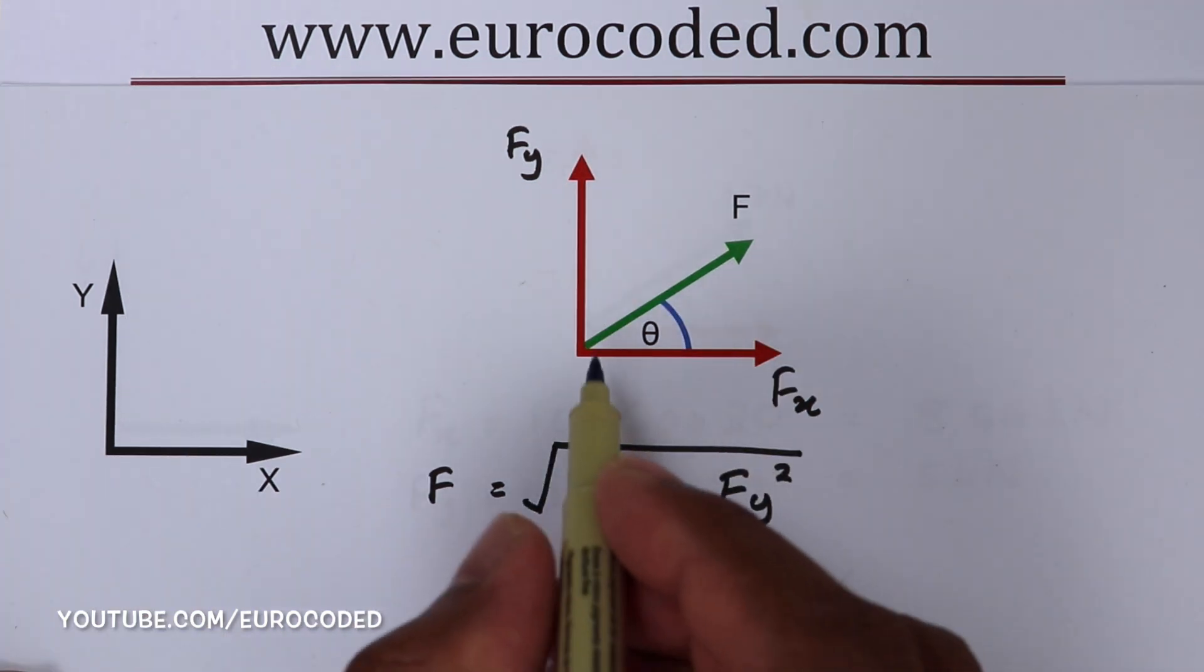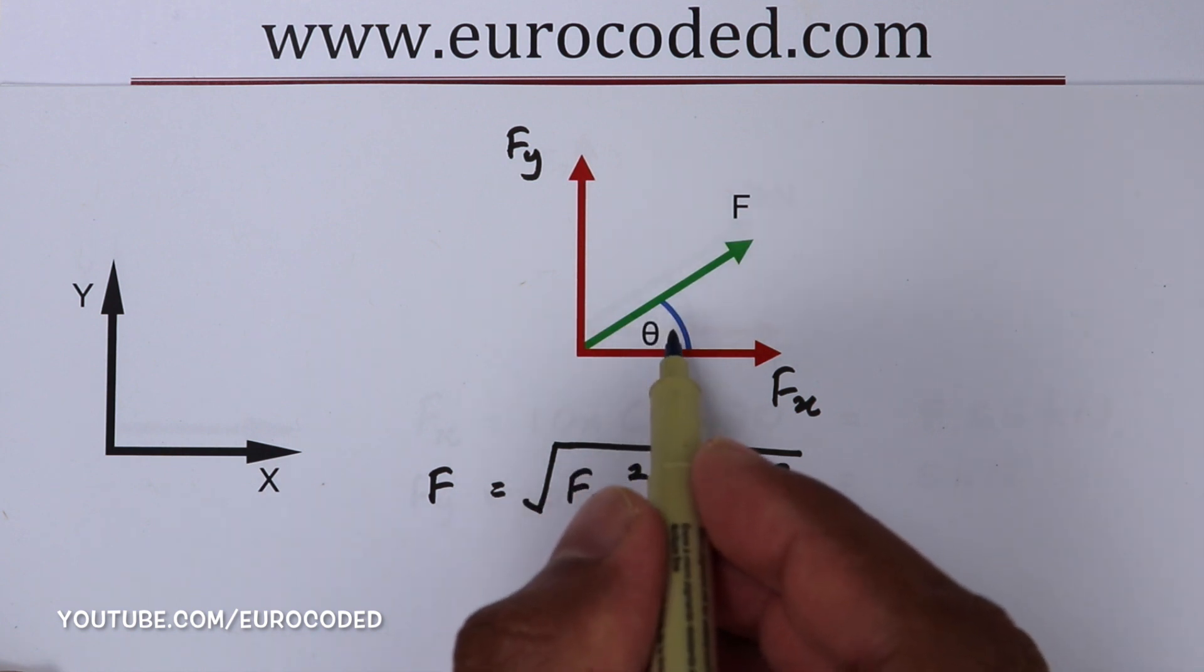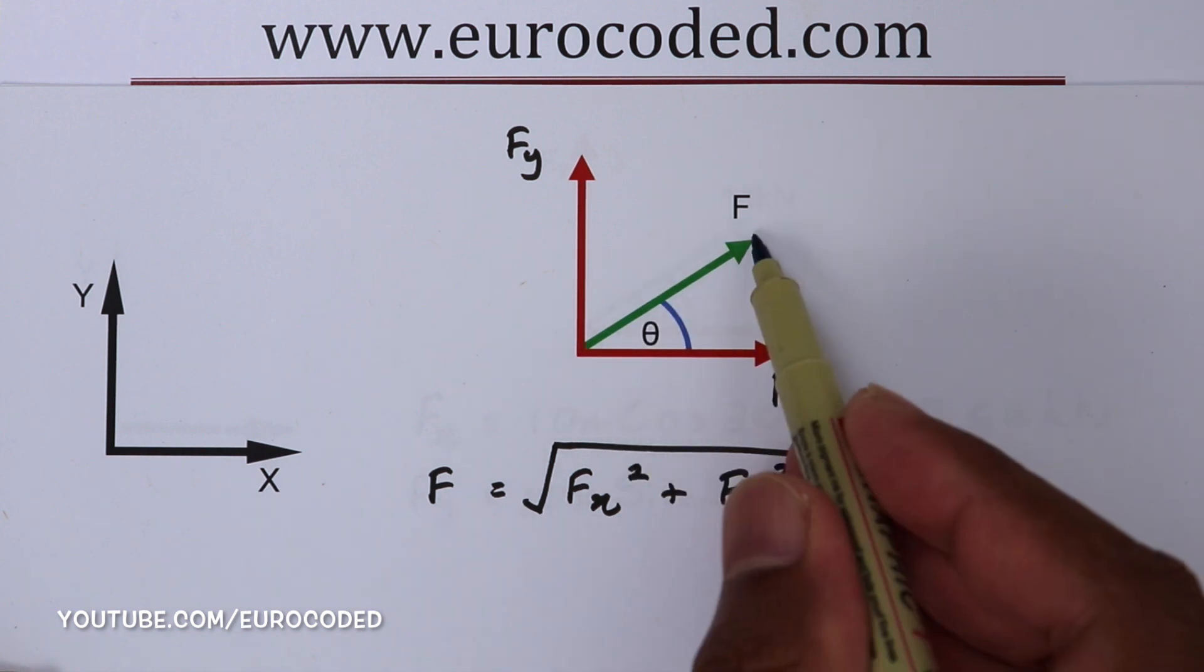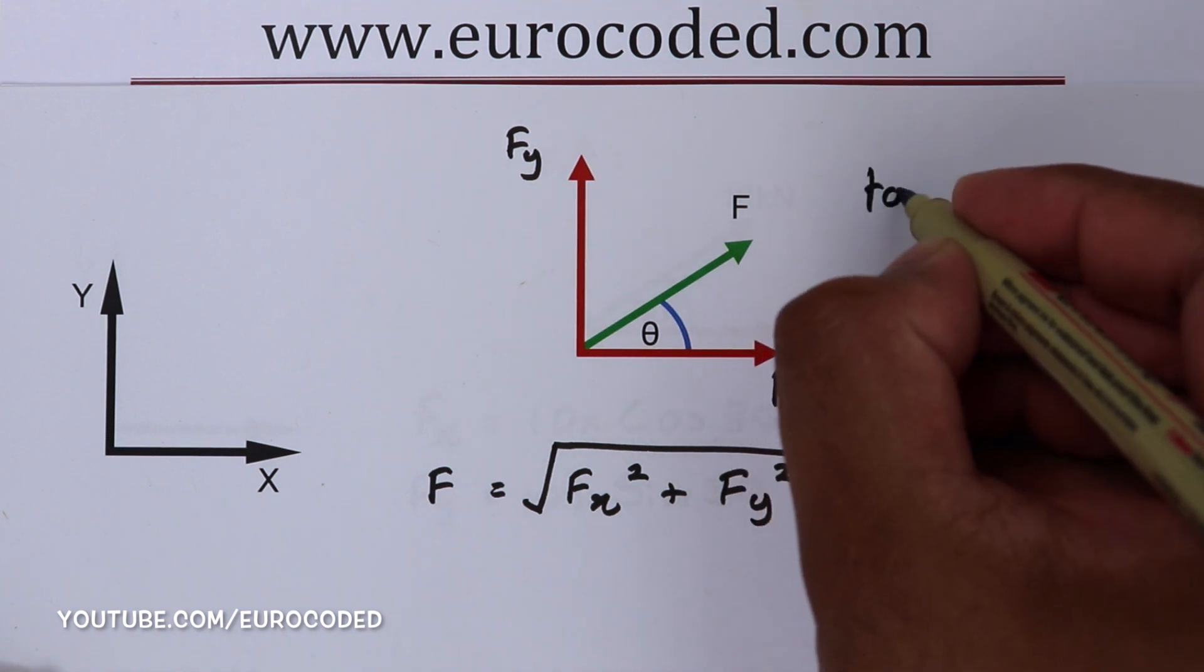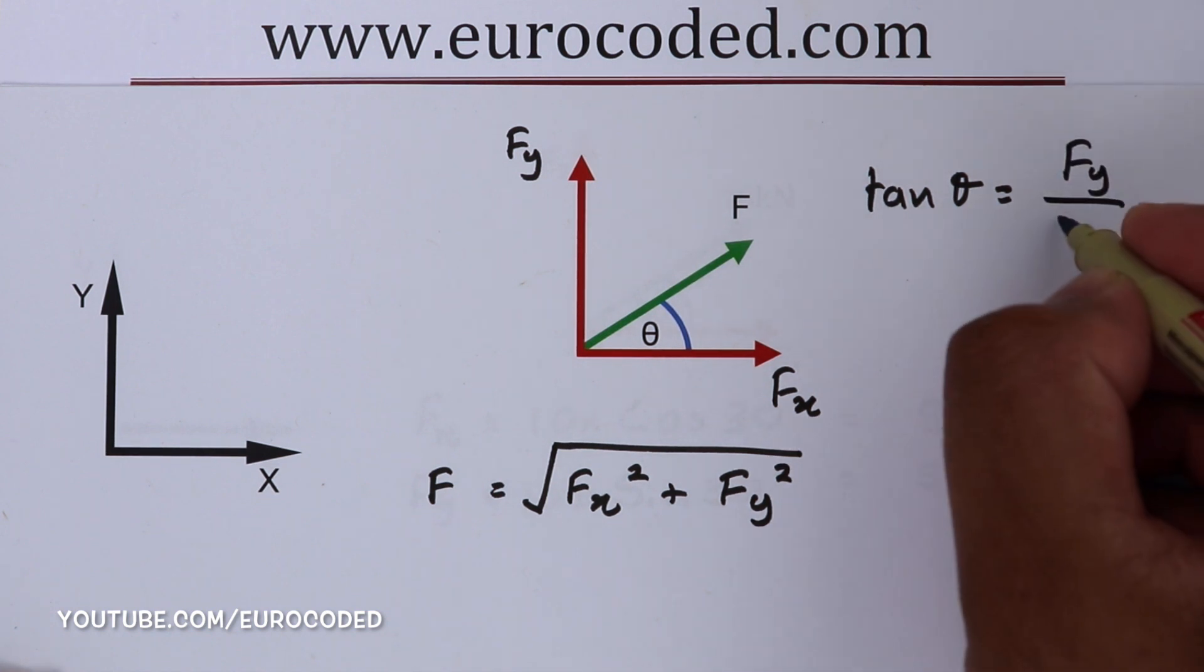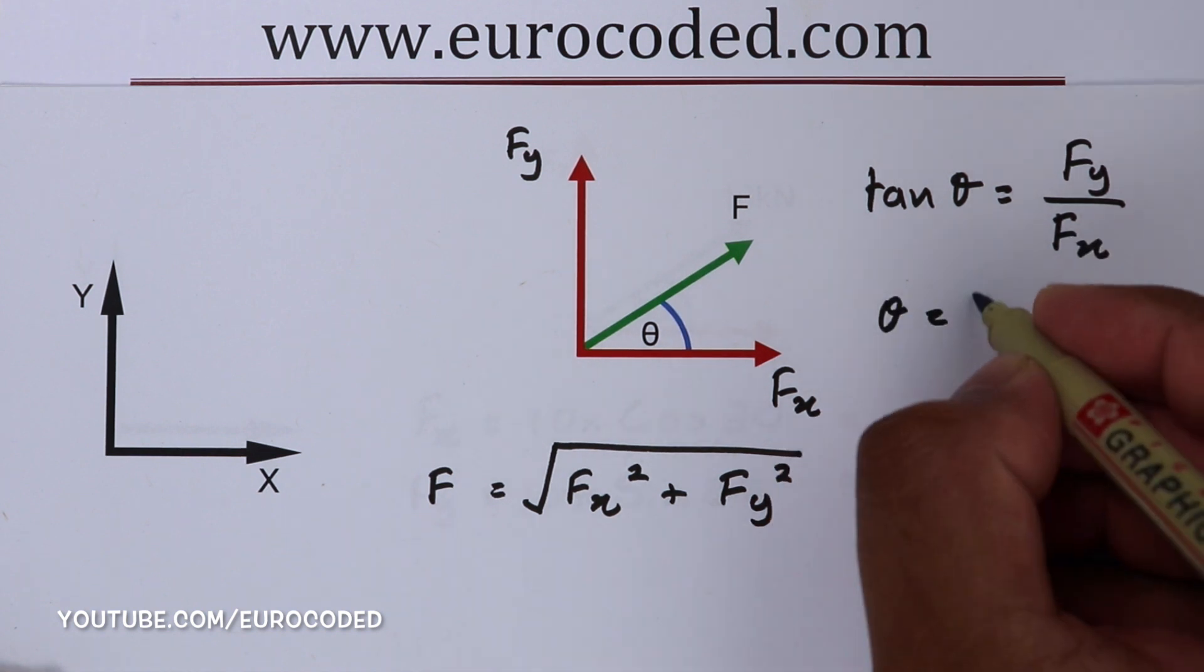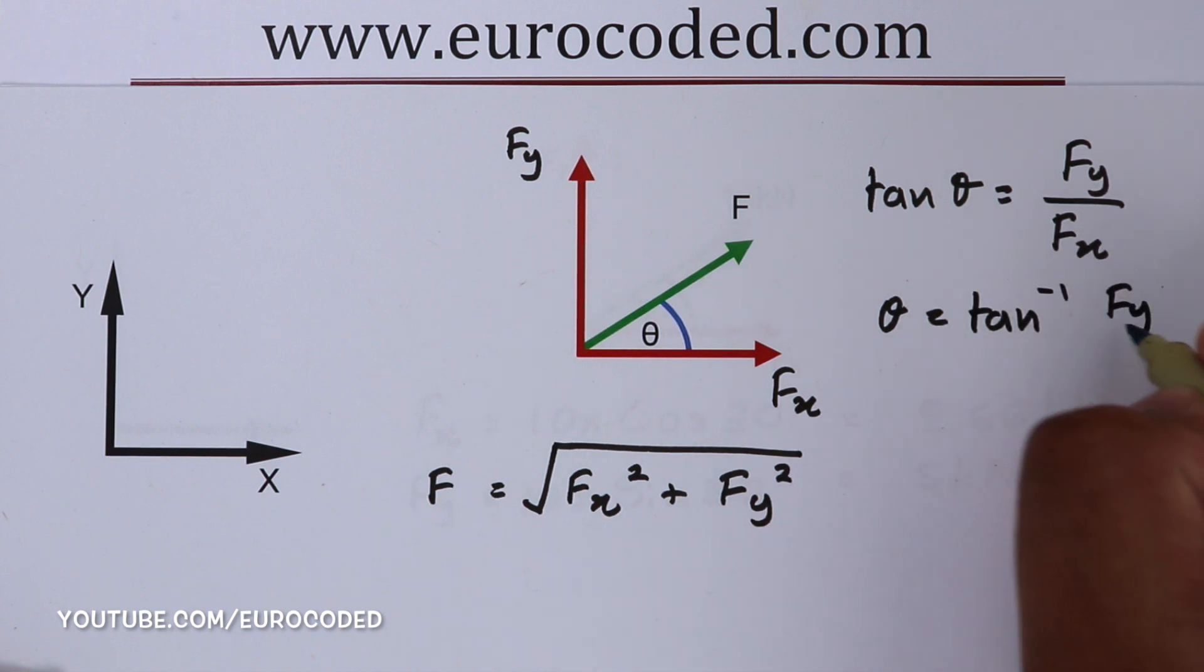Then we can use basic trigonometry to find this theta angle between the direction or the sense of this resultant force and the X axis. We can write tan theta is equal to Fy over Fx, and theta is equal to inverse tan of Fy over Fx.